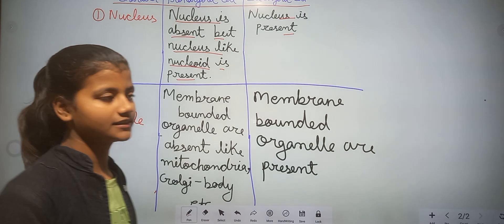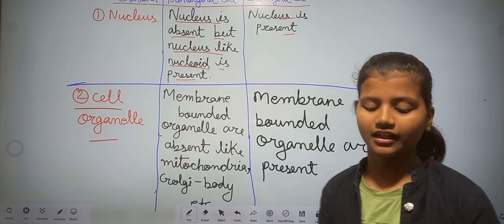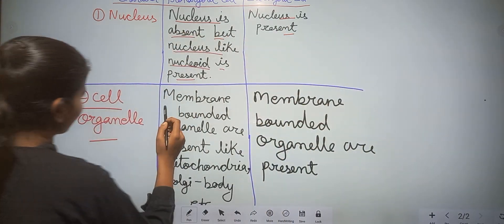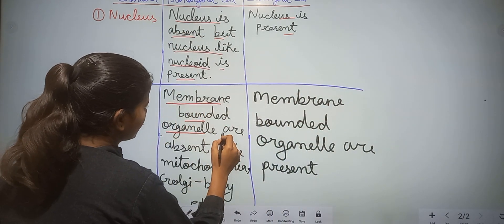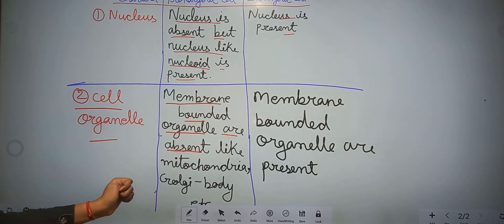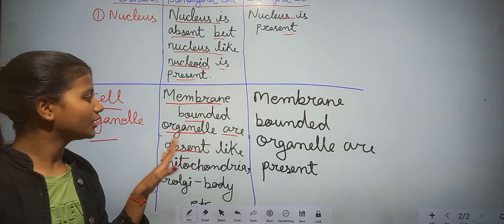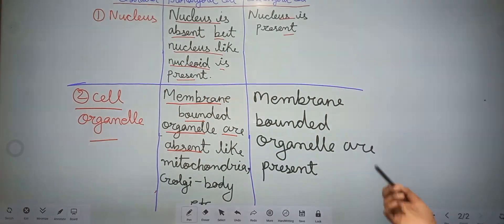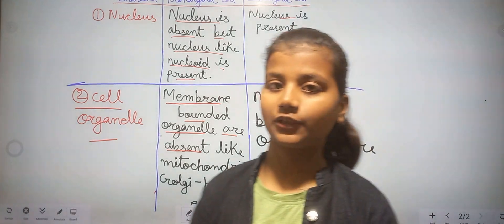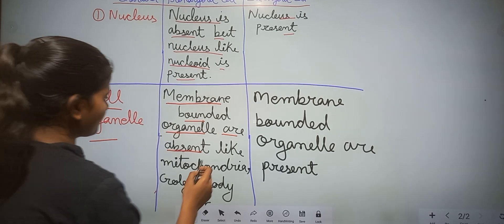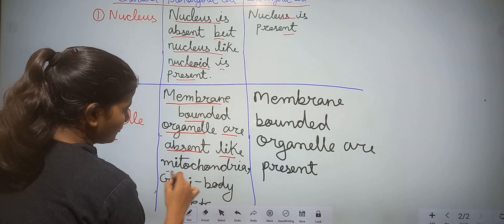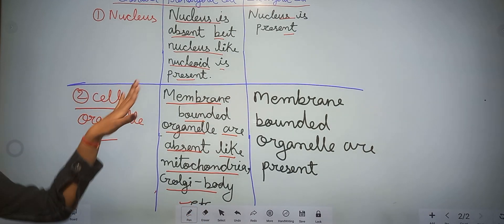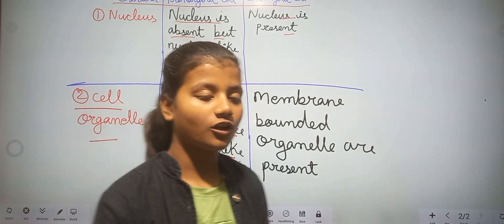Our second character is cell organelles — like mitochondria, golgi body, lysosome, endoplasmic reticulum, and many more. In prokaryotic cell, membrane-bounded organelles are absent.